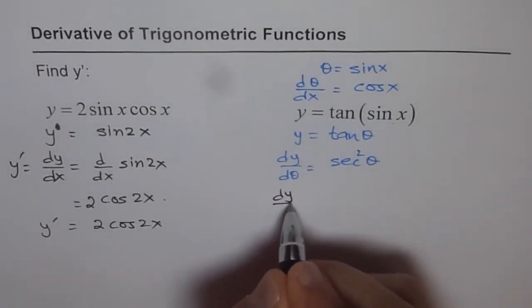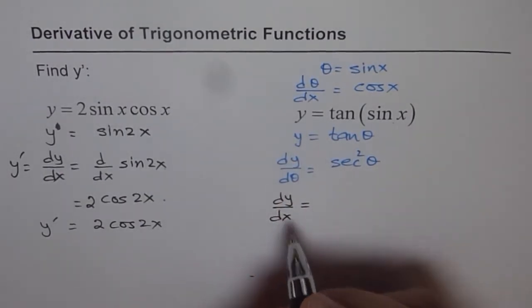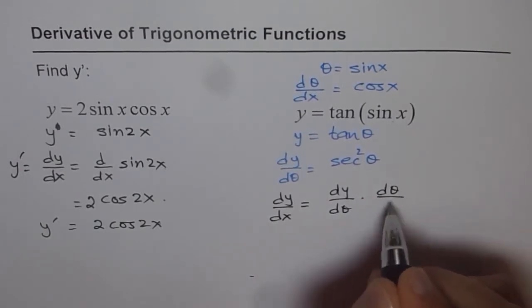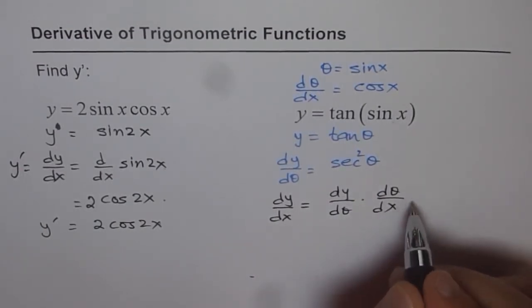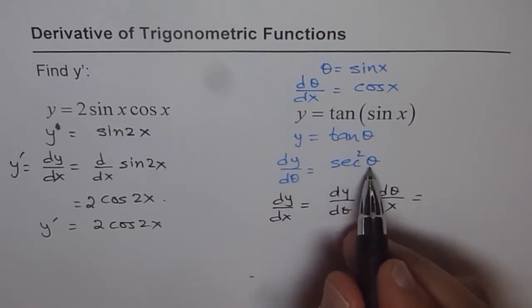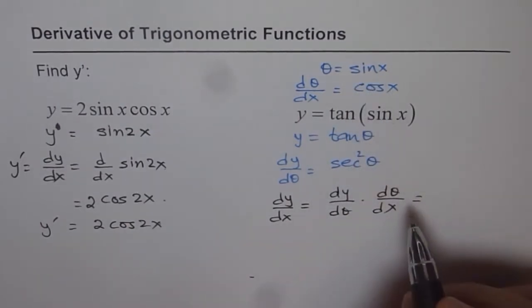So what is dy dx for us? We will apply the chain rule. dy dx is dy d theta times d theta dx, correct? Now what is dy d theta? dy d theta is secant square theta, right? And theta is sin x. Do you see that?